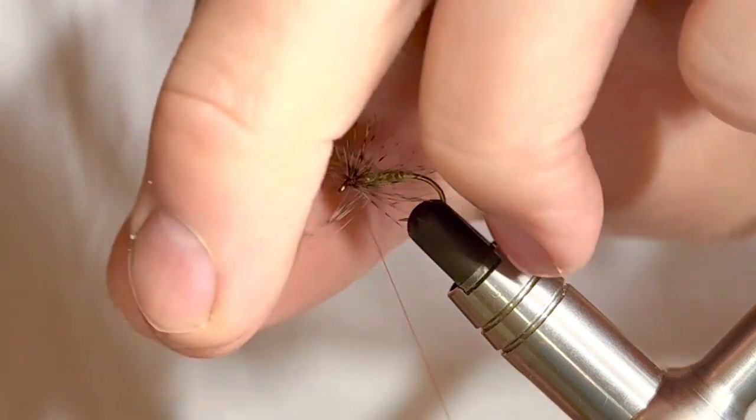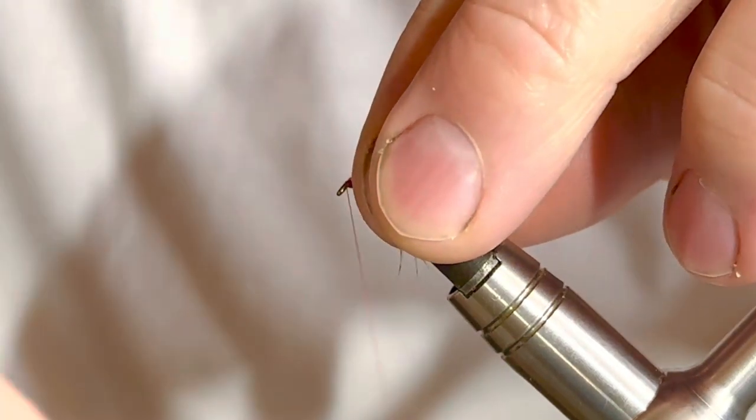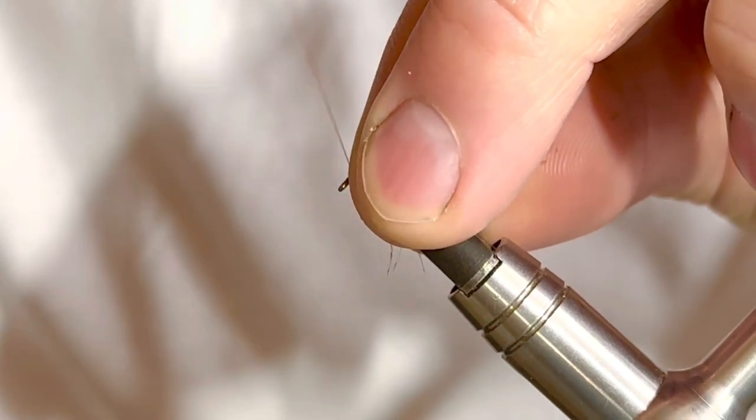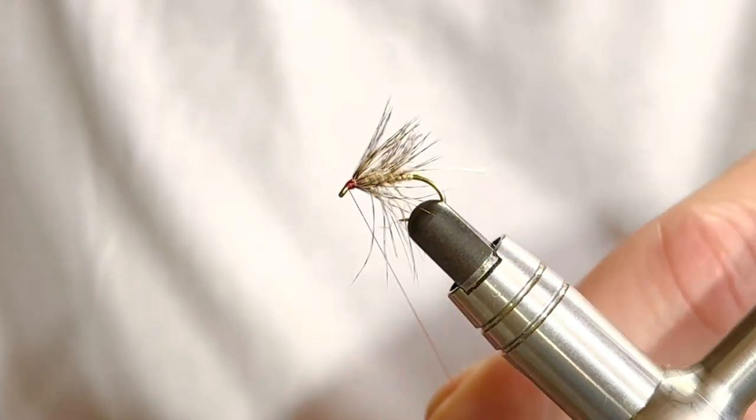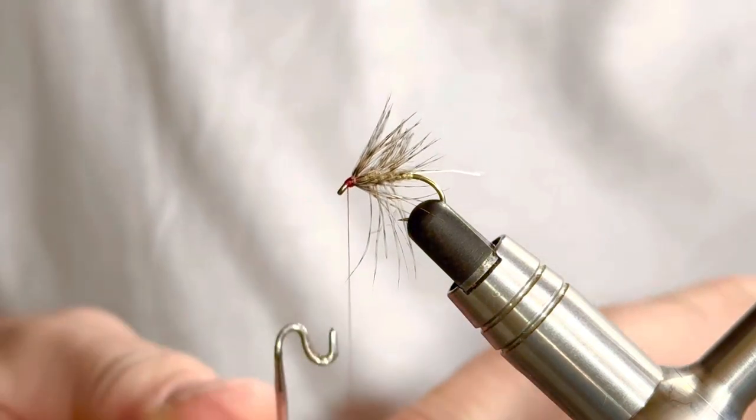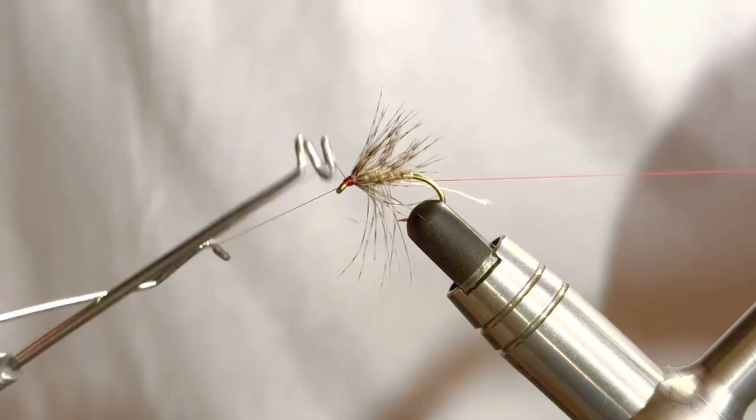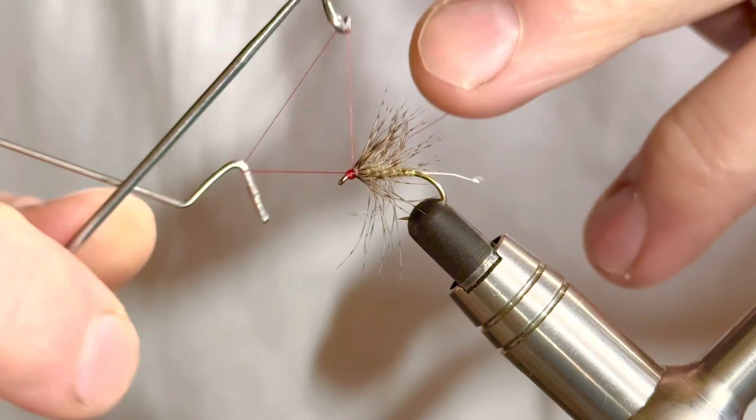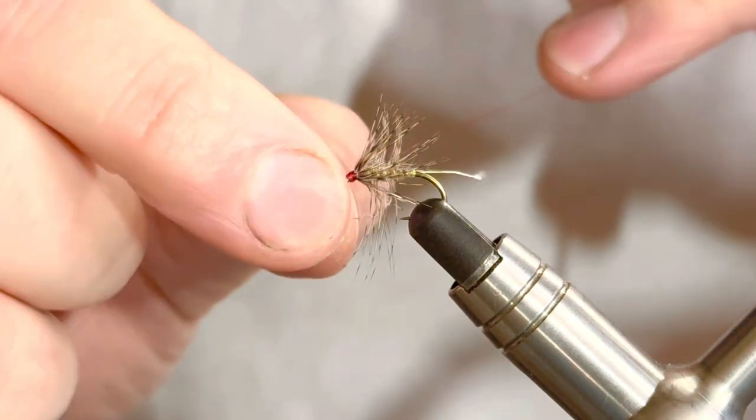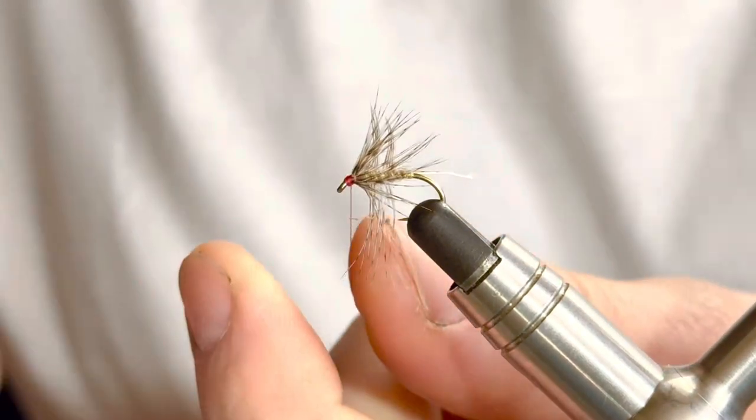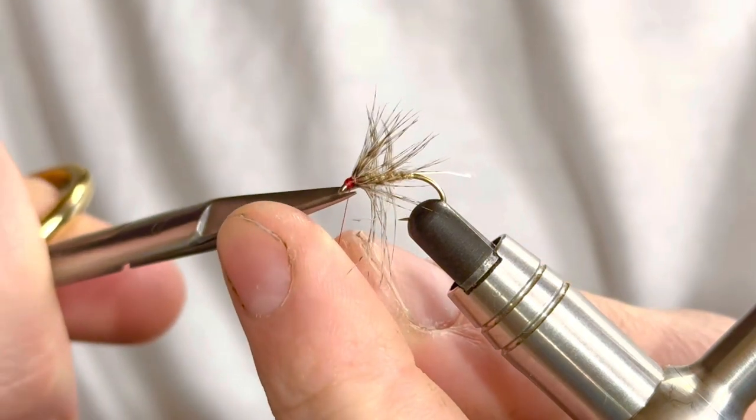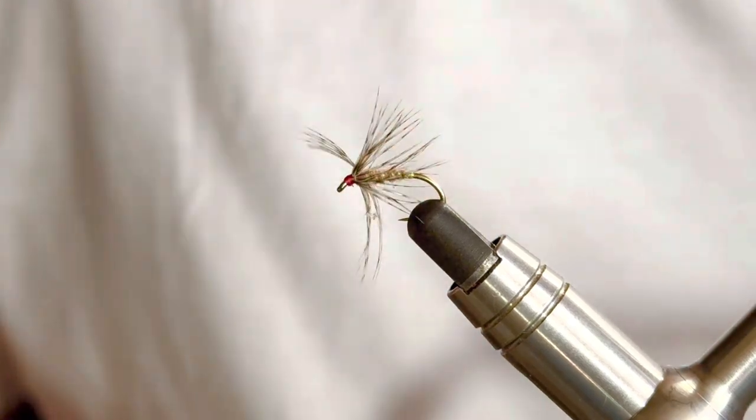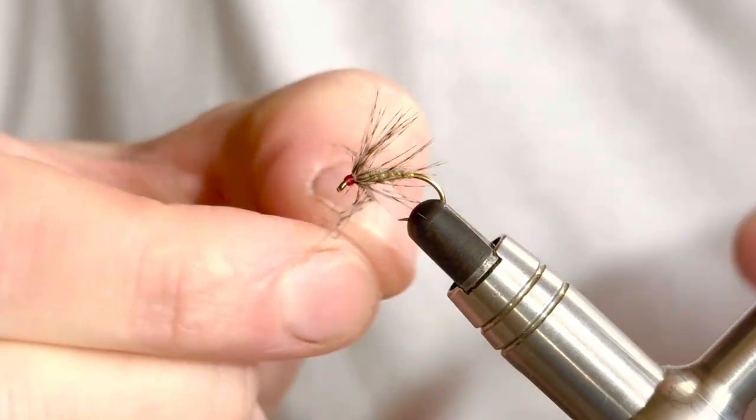With your hackle pliers off, stroke all of the fibers back out of the way and you can start to create your head. Like I say, this is why I've chosen to use a red thread—it just gives the fly that little target spot. So we'll finish that then with a five turn whip finish: one, two, three, four, and five. We can trim away our tying thread.